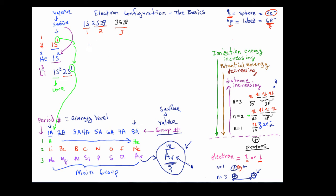Let's quickly look at beryllium. Beryllium has an atomic number of 4. When we write the configuration it's going to be 1s2, 2s2. The 1s shell is the core, and the two electrons that are in the 2s are valence or surface electrons. So in a chemical reaction that involves the exchange of electrons, it's going to be the surface electrons in all these cases that undergo the reactions. The core electrons are going to be left alone.